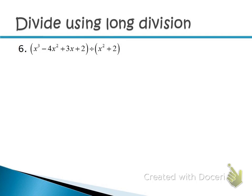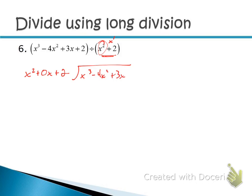What about when you're missing a term? Here we're dividing by x² + 2. There's an x² term, but the next term should be x to the first — and it's not there. So we fill it in with 0x, because 0 times x is 0 and it doesn't change what we're dividing by — it's just a placeholder. We're dividing into x³ − 4x² + 3x + 2, which has all its terms present, so no zeros needed there.